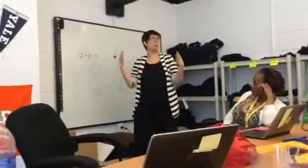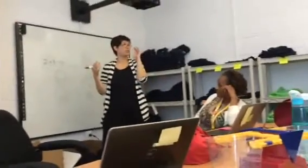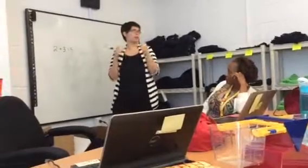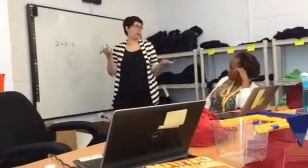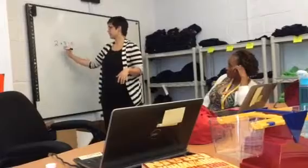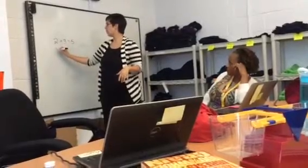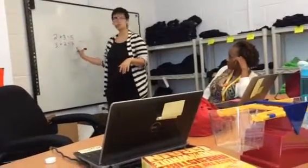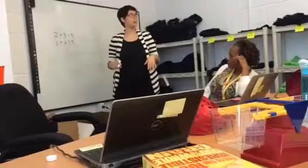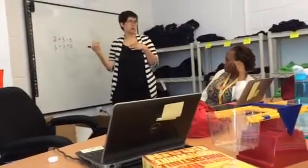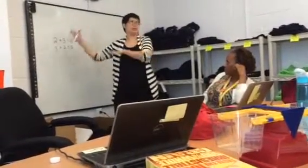So now when we're writing all these different facts, a very simple short rhyme is: criss-cross, reverse, reverse. We're going to criss-cross these to write our other addition fact, which you've already taught a lesson on — the commutative property of addition — so this is not new.